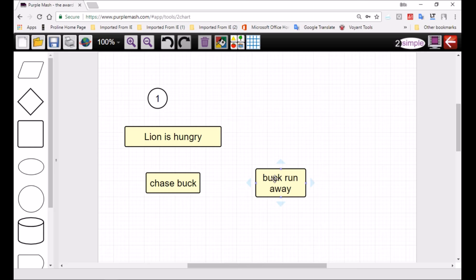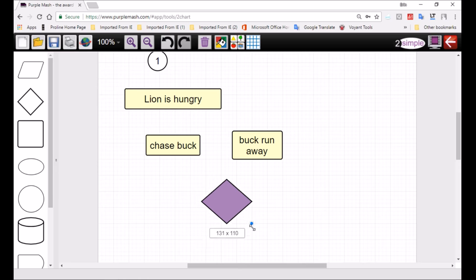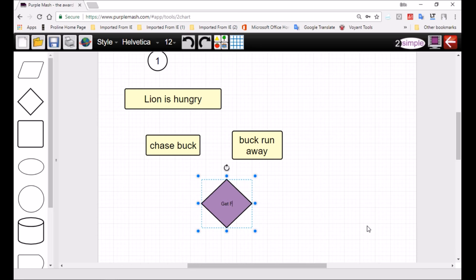So let's just change that to chase buck. We got a whole process: lion chases buck, buck runs away. Then we have a decision takes place. Now usually a decision is something quite critical. It determines whether it goes one way or another. We have lion gets food, and we're talking about from the lion's point of view. The lion gets food or he doesn't get food.